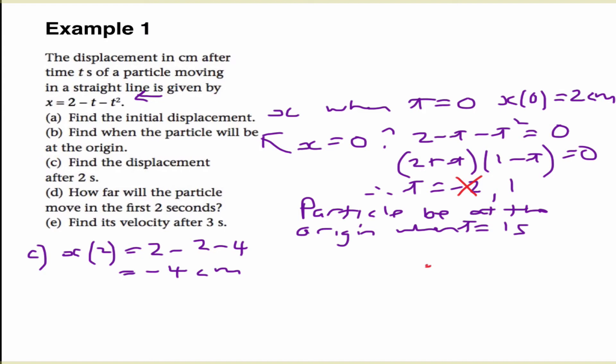initially, our particle was at 2 centimeters. So this is 2 centimeters to here, time equals 0. And after 2 seconds, so t is equal to 2 seconds, our particle has moved in a straight line towards the negative direction. So how far will the particle move in the first 2 seconds? If it started at 2 meters and ended up at minus 4 meters, or centimeters they are, sorry, it's moved a total of 6 centimeters. So the distance it's actually traveled is 6 centimeters.